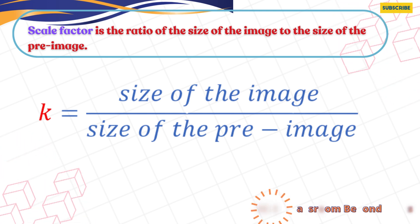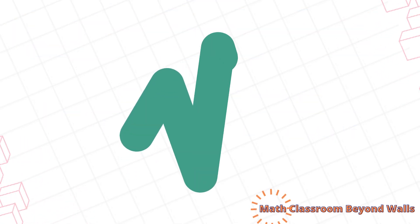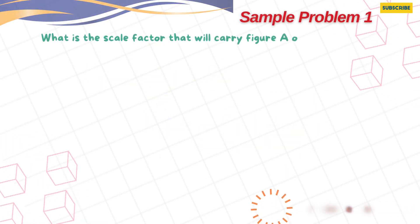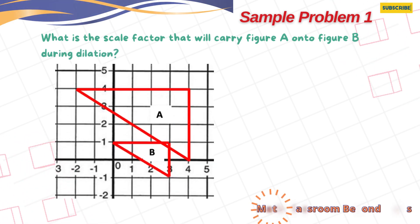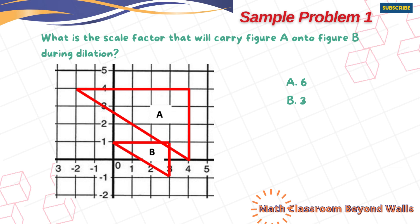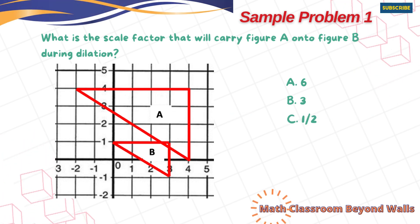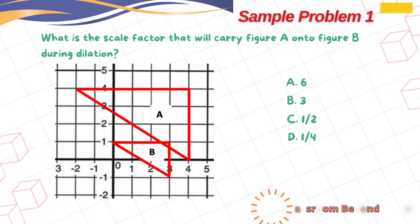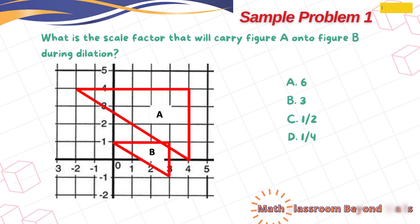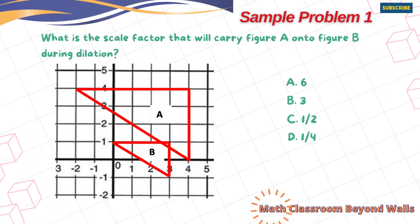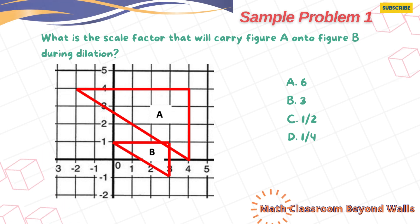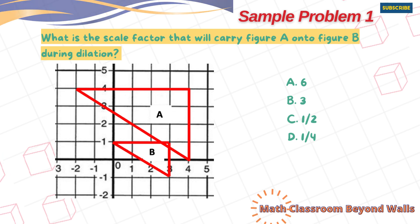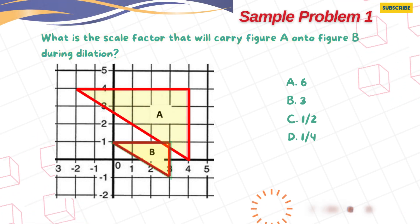Let us work on the sample problem so you will know how to find the scale factor. Sample Problem 1: What is the scale factor that will carry figure A onto figure B during a dilation shown below? The options are: A) 6, B) 3, C) one half, D) one fourth. We begin by reading the whole problem to know what we are looking for, what is given, and how the given information helps find what we're looking for. The problem asks for the scale factor that will carry figure A onto figure B during the dilation. We are given a figure with triangles A and B on the coordinate plane.